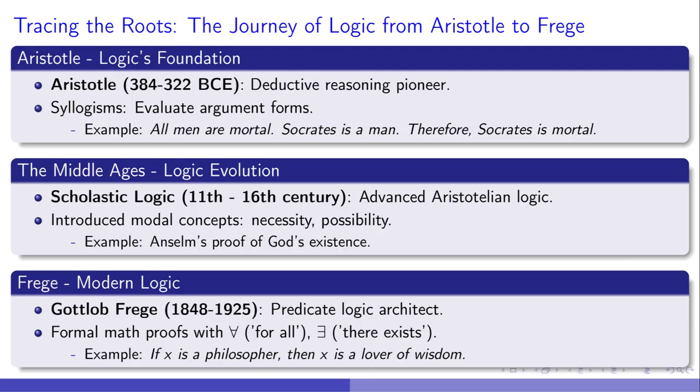Diving deeper from our discussion on propositional versus predicate logic, Aristotle's syllogisms laid the groundwork, like a seed planted for logic's mighty tree. All men are mortal, Socrates is a man, thus, Socrates is mortal, shows deductive reasoning at play. Fast forward, the Middle Ages enriched this through scholastic logic, adding essential concepts like necessity. But why is Frege's symbolic system transformative? It meticulously structured arguments, forging the avenue to comprehensive logical analysis. Each step, from Aristotle to Frege, not only unravels logic's evolving narrative, but profoundly enriches our grasp of predicate logic's role in modern disciplines.